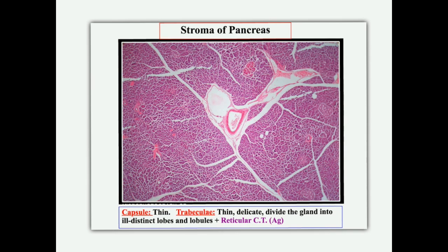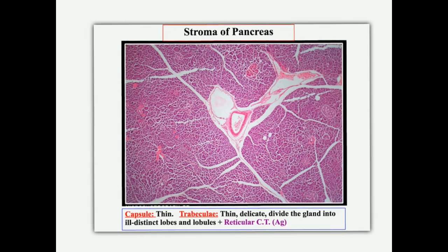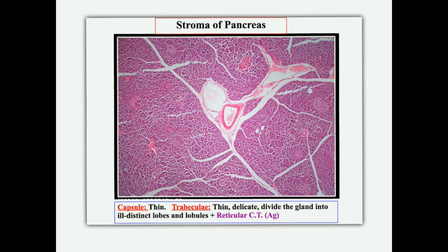The stroma is formed of a capsule which is very thin, and the trabeculae which arise from the undersurface of the capsule are also very thin. Accordingly, the gland is divided into indistinct or ill-defined lobes and lobules. The lobule is not completely separated, as you can see, nor are the lobes. In addition, there is a background of reticular networks stained by silver.